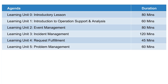Learning Unit 5 is about problem management. The purpose, objective and scope is discussed in this unit. The end-to-end process flow for problem management, inclusive of problem analysis techniques, error detection, components, activities and operation, including its organisational structure as well as any interfaces with other processes, are included.